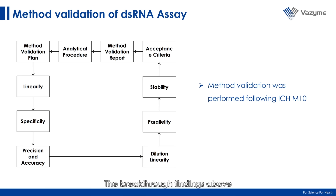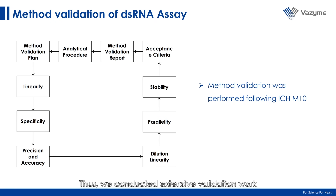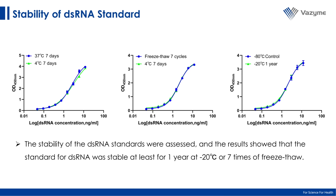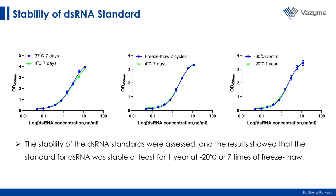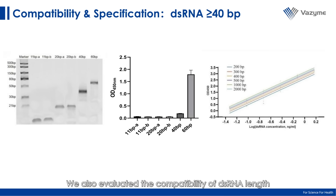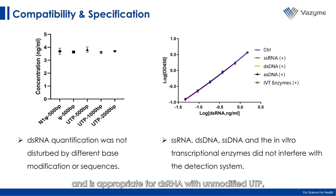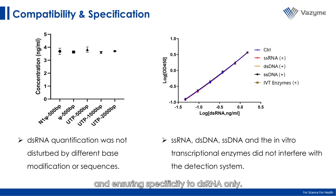These breakthrough findings encouraged us to upgrade the method from a research-grade assay to a product for batch release. We conducted extensive validation work following ICH Q2 guidelines. For example, we tested the stability of the dsRNA standards, and they showed stability for at least one year at minus 26 degrees and through seven freeze-thaw cycles. We also evaluated the compatibility of dsRNA length and modification — this kit can recognize dsRNA longer than 40 bp and is appropriate for dsRNA with unmodified UTP, pseudouridine, or N1-methyl-pseudouridine, ensuring specificity to dsRNA only.